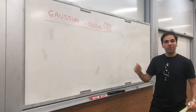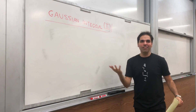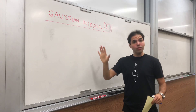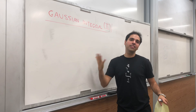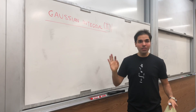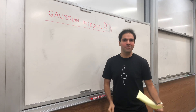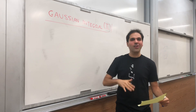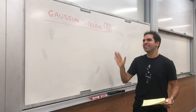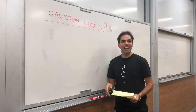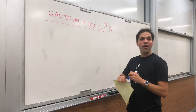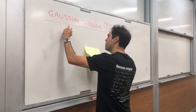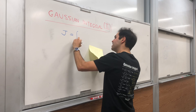Welcome to the second part of the Gaussian integral, where this time I won't use multivariable calculus. I will use a simple u-substitution. Before I forget, I'd like to thank Keith Conrad for his amazing notes finding 12 ways of calculating the Gaussian integral. So now, method number 2: using u-substitution.